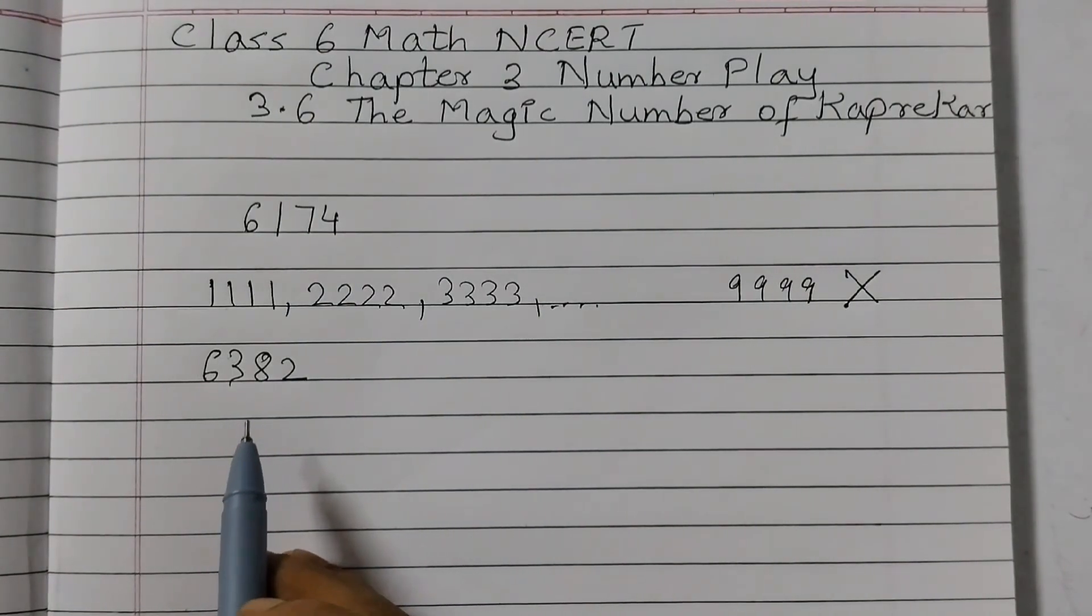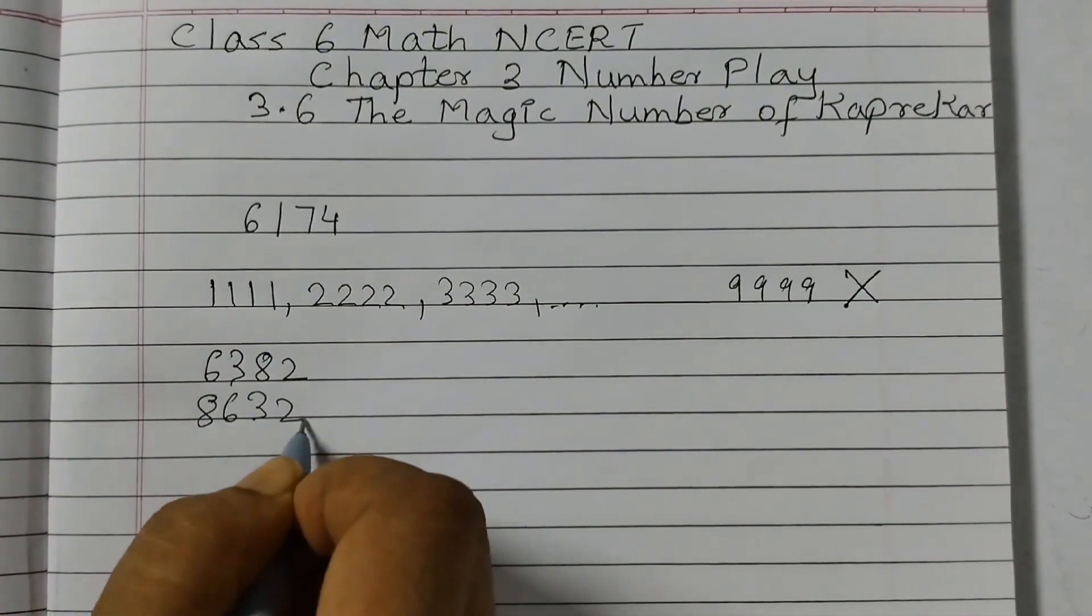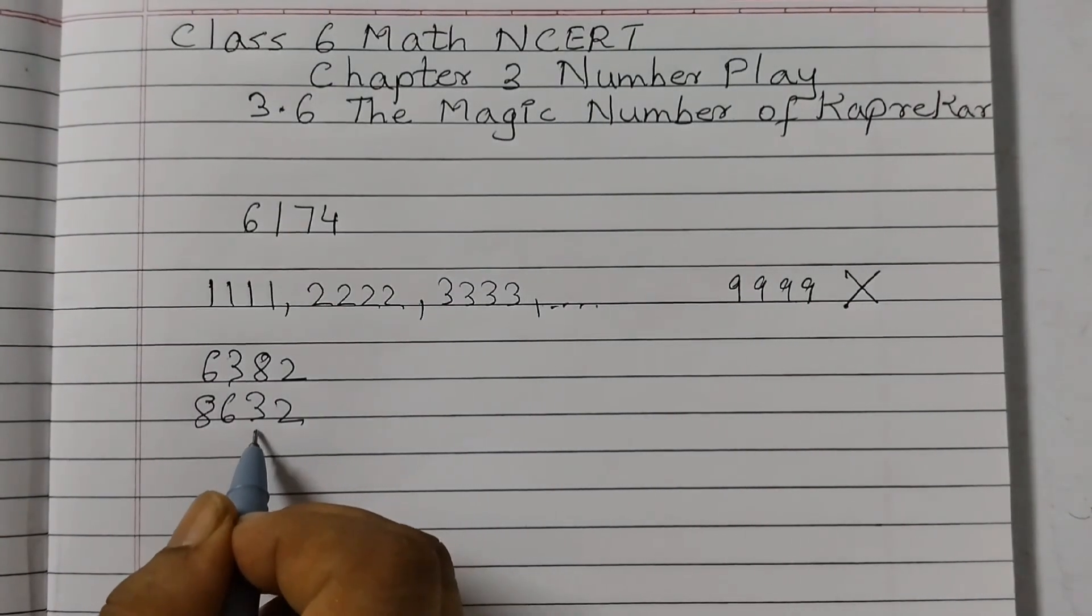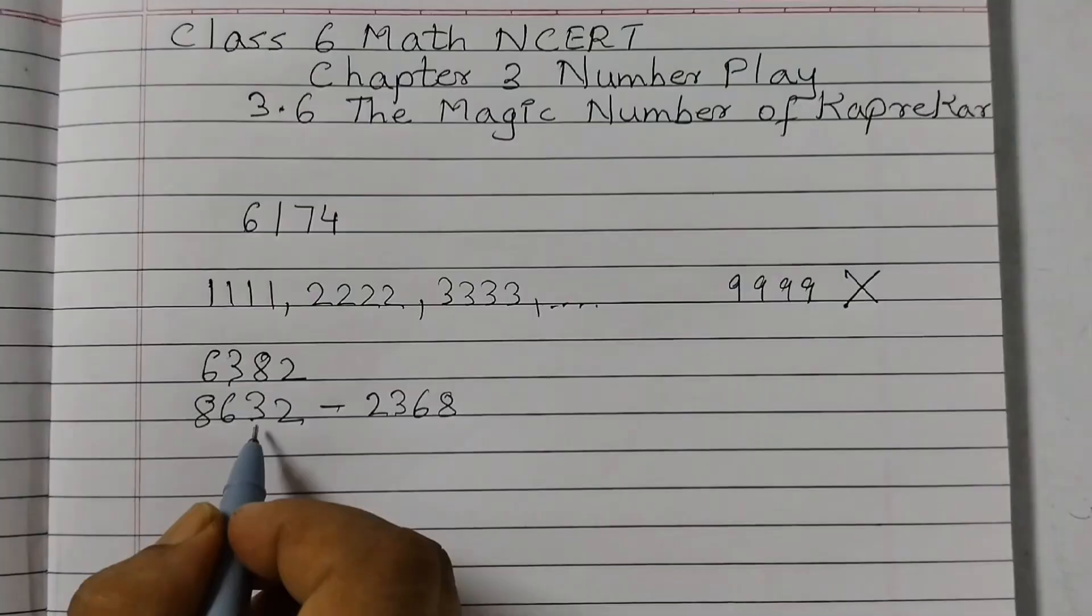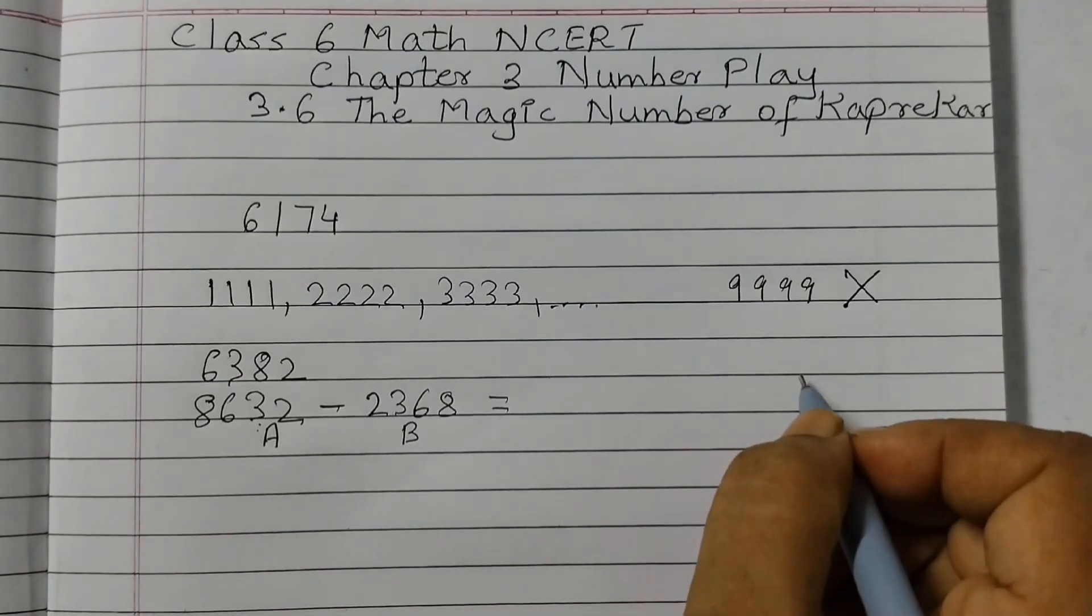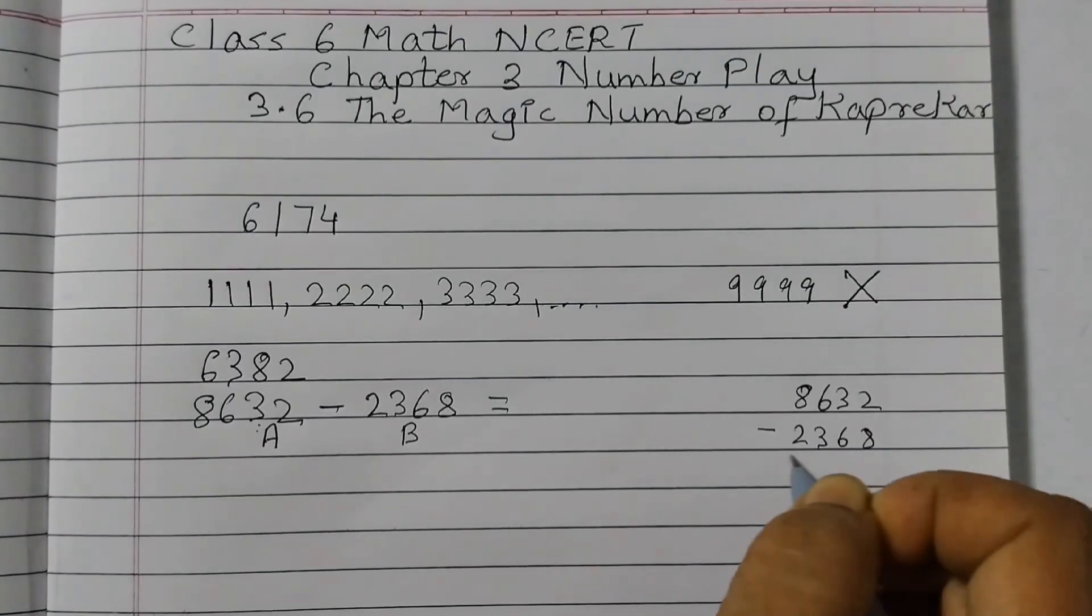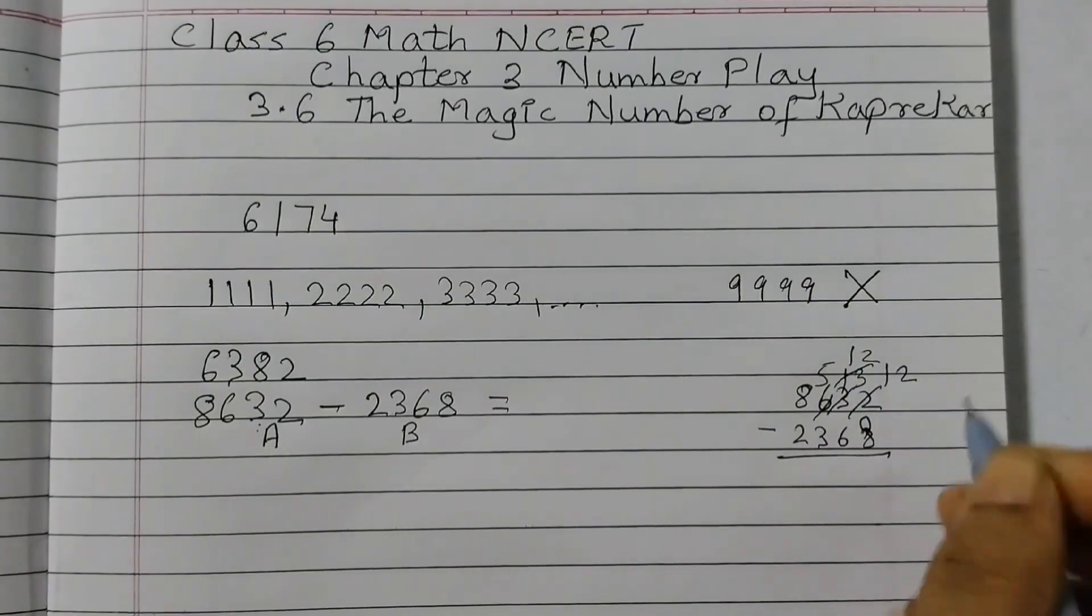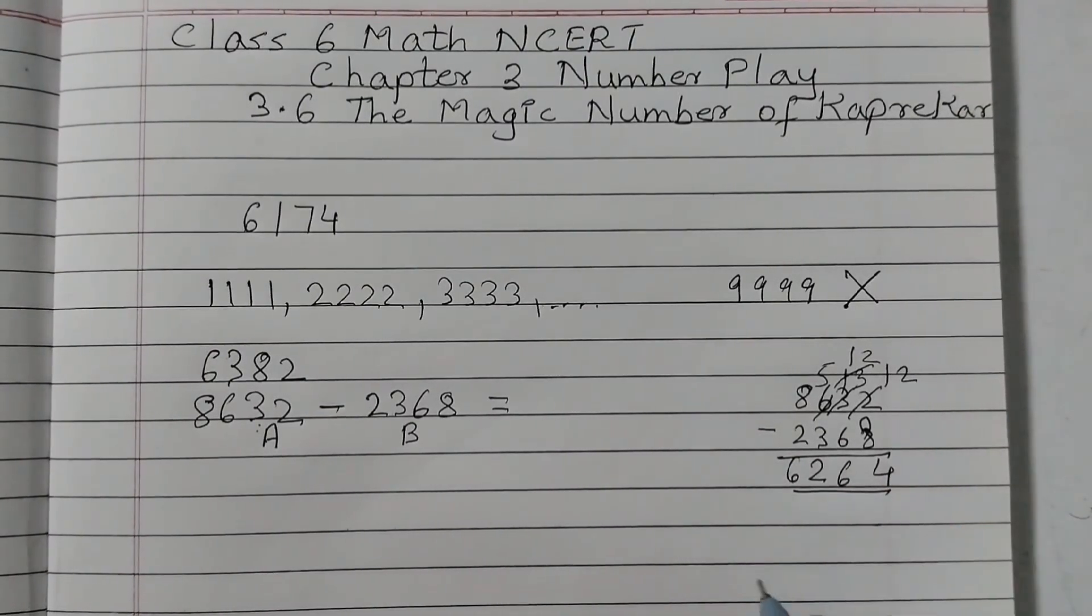We need to follow some rules to get this magic number 6174. First, we have to form the largest number using these 4 digits. So the largest number would be 8632 and the smallest number would be in the reverse order, that is 2368. Subtract these two numbers. We can call this as A and this as B. So A minus B will give us C. So let us subtract. 8632 minus 2368. This would give us 6264.